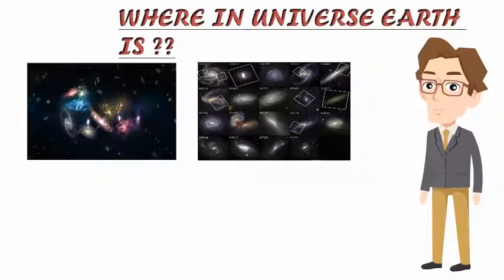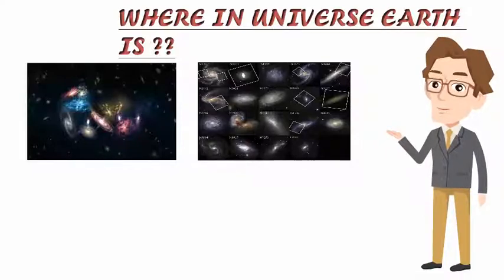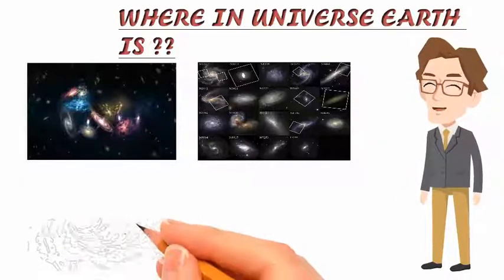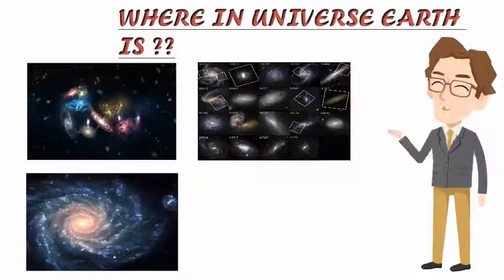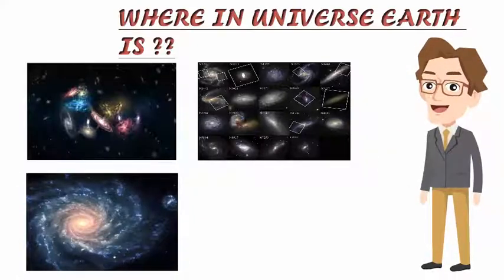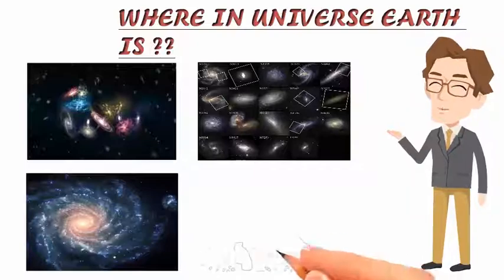It is thought that superclusters may also be arranged in even larger structures called walls, such as the Sloan Great Wall, which is about 1.5 billion light years long, although these may not be true structures, as their parts are not gravitationally bound together.